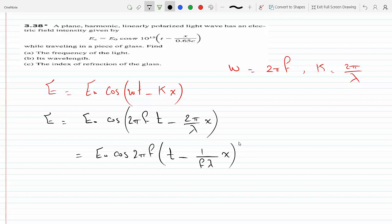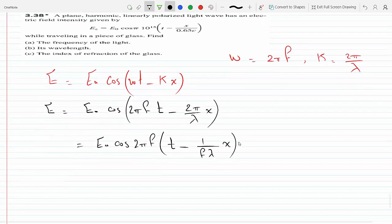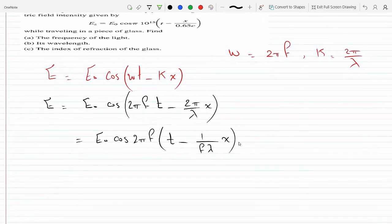And what is f lambda? This is per second, this is meters. This is the velocity of the wave. So then we will get E equal E₀ cosine 2πf times t minus x over v.